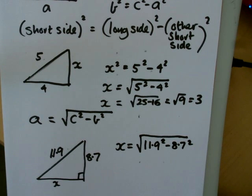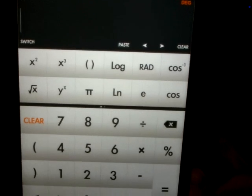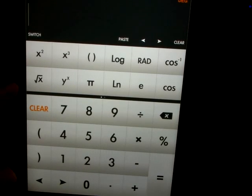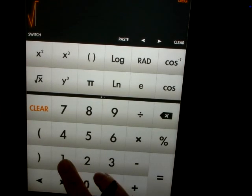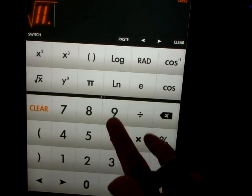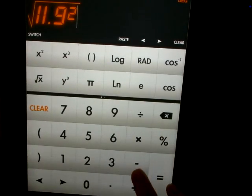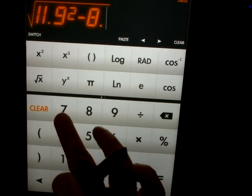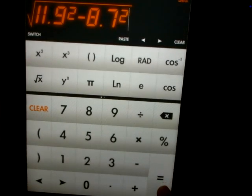So I'll now bring my calculator onto the screen again, 11.9 and 8.7. Okay, I'll remember that this time. So it's the square root of 11.9 squared minus 8.7 squared, and that comes